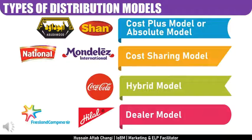The fourth model is the Dealer model, which many companies in Pakistan use — including Fries & Campina, Engro Pakistan, and Halal Foods. In the Dealer model, the KPIs for the distribution mirror those of the company. The same KPIs followed by the RSM, NSM, ASM, TSM, and wholesale organization are also followed by the order booker. Everyone must qualify for targets: outer productivity, call productivity, strike rate, drop size, and SKUs per bill.